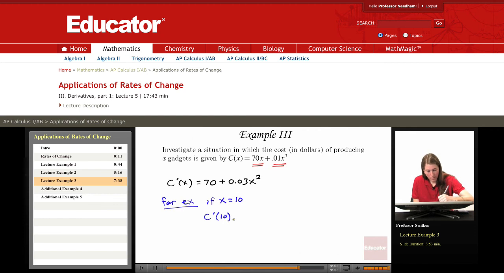Then C'(10) is 70 plus 0.03 times 10 squared, which is 70 plus 0.03 times 100. So that's 70 plus 3, which is $73.